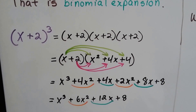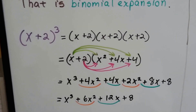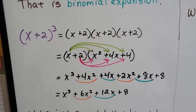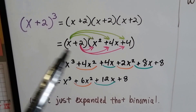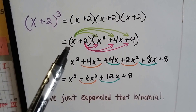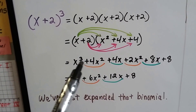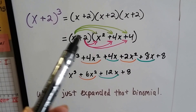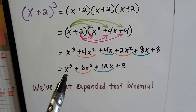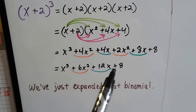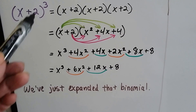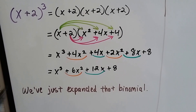If we have x plus 2 to the third power, that just means that we've got x plus 2 three times, multiplied to itself: x plus 2 times x plus 2 times x plus 2. We can just keep doing it using the distributive property. And when we combine the like terms, we get x to the third power plus 6x squared plus 12x plus 8. We just expanded that binomial — and it all started with this one tiny little binomial to the third power. Look at how big it got.